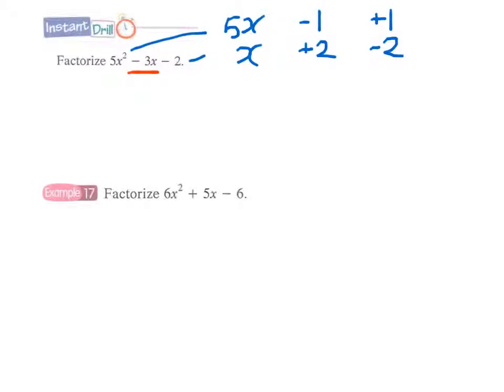And since there will be four groups of factors, we can write it in a more systematic and concise way like this one: 5x, x. We have -1, +2 or +2, -1. We interchange their position. And the second pair: +1, -2, and then we interchange their position again.